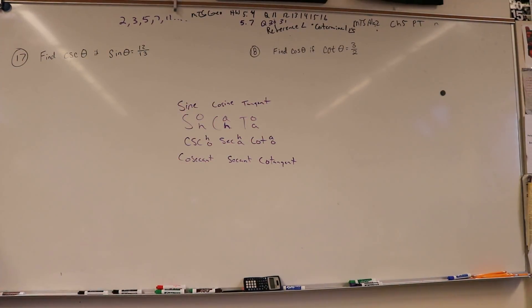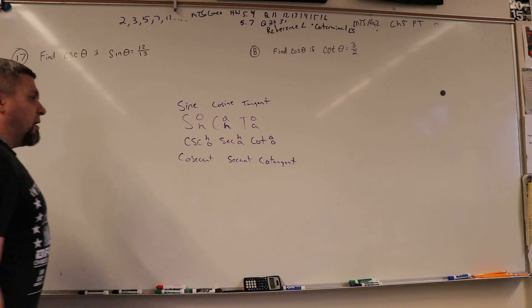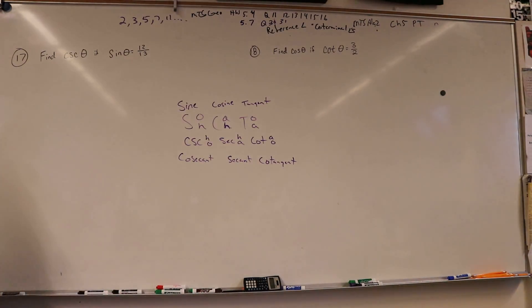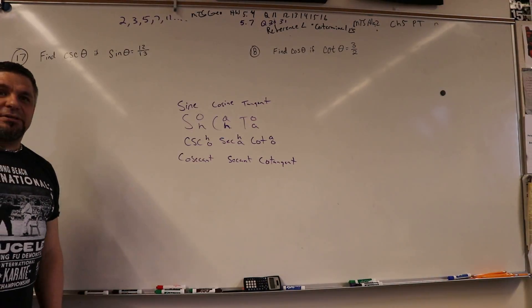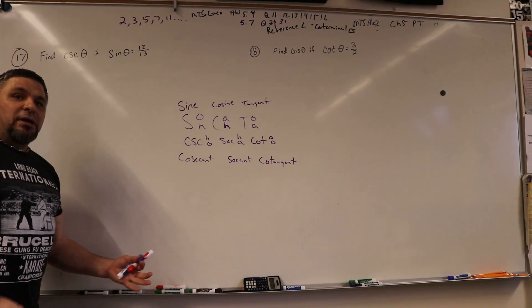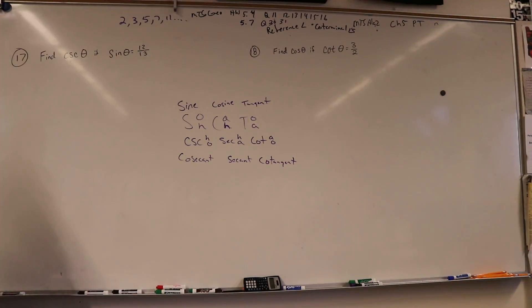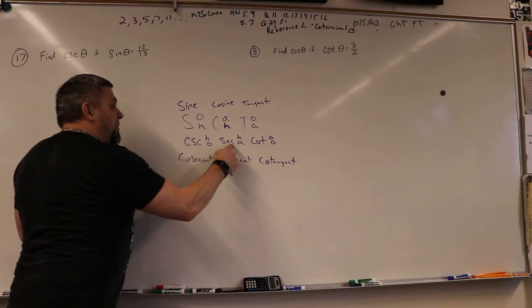And then secant be hypotenuse over adjacent. So that's how I try to remember it. Now, because of you guys, it kind of flows nicely. Secant be, right, hypotenuse over adjacent. So that way she's a hawk, secant's adjacent over hypotenuse. So that way I know which one to put there.